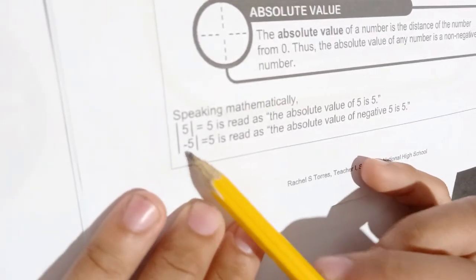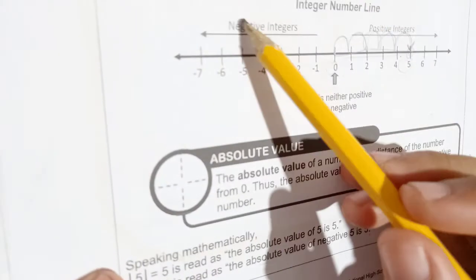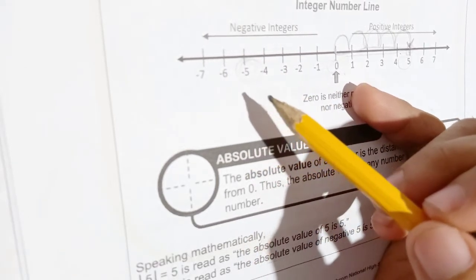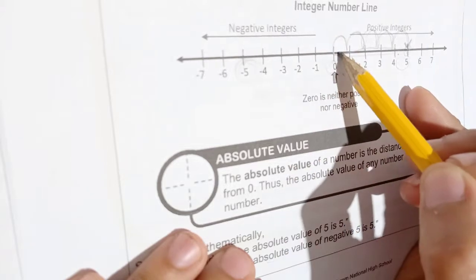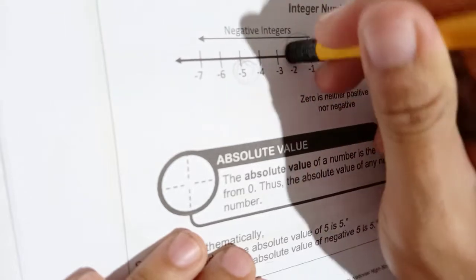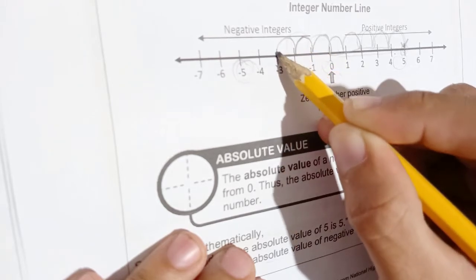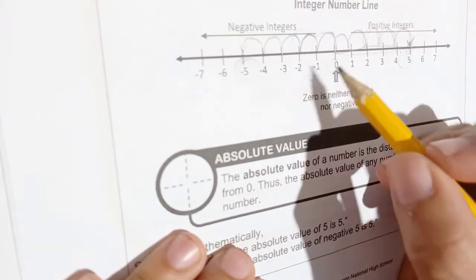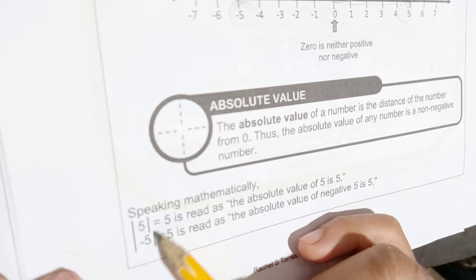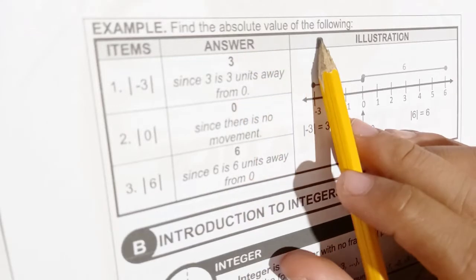What about the absolute value of negative five? On the number line, locate negative five. The absolute value is the distance from zero, so we count from zero: one, two, three, four, five. There are five units or five steps from zero to negative five. Therefore, the absolute value of negative five is also five.